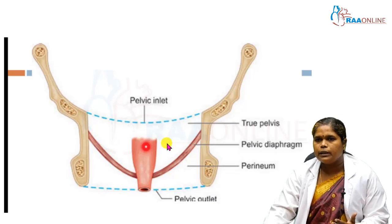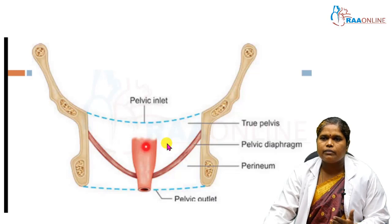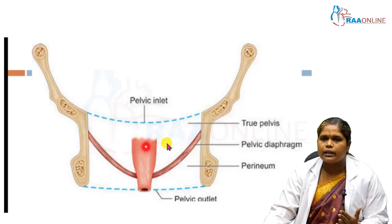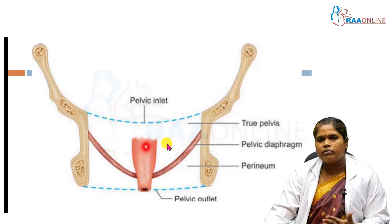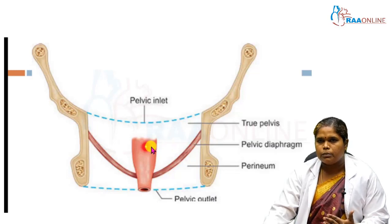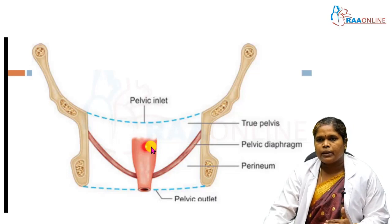In the male pelvis we have only the urinary bladder and rectum, and in between we will have the opening of the vas deferens and seminal vesicle. So the pelvis is different in males and females.